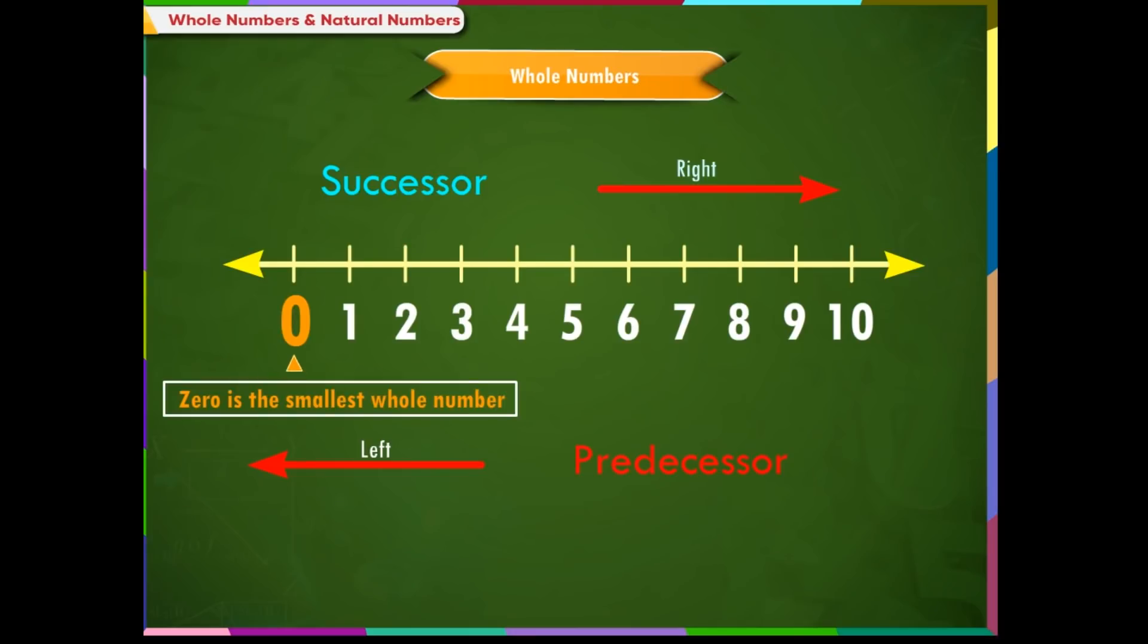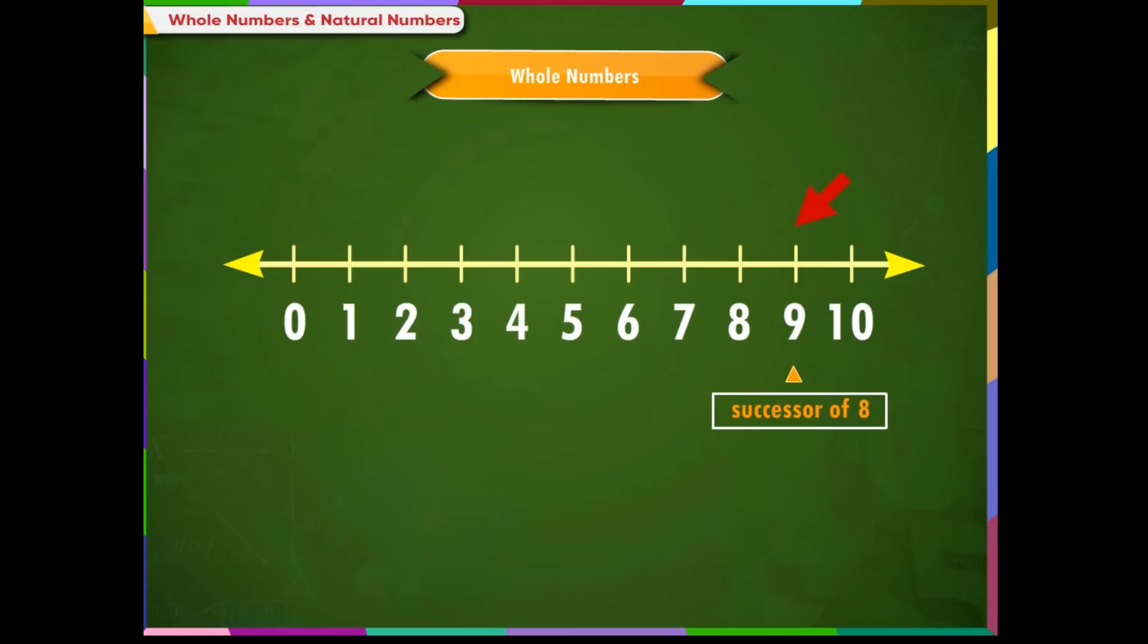0 is the smallest whole number. Each and every whole number has a successor starting from 0. For example, 1 is the successor of 0. 9 is the successor of 8.